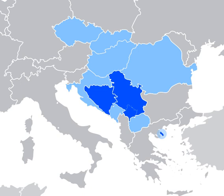Serbian is practically the only European standard language whose speakers are fully functionally digraphic, using both Cyrillic and Latin alphabets. The Serbian Cyrillic alphabet was devised in 1814 by Serbian linguist Vuk Karadžić, who created the alphabet on phonemic principles. The Latin alphabet was designed by Croatian linguist Ludovit Gaj in 1830.